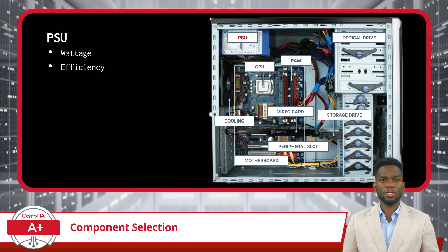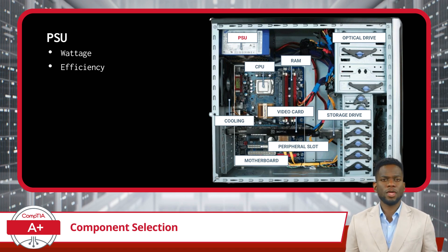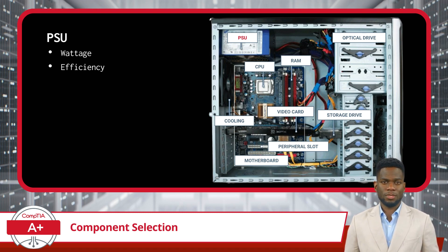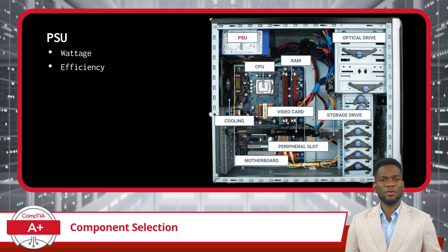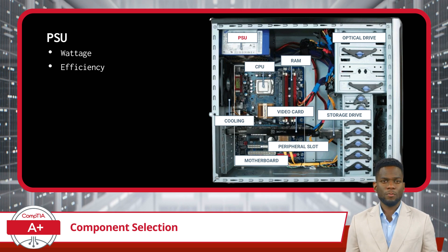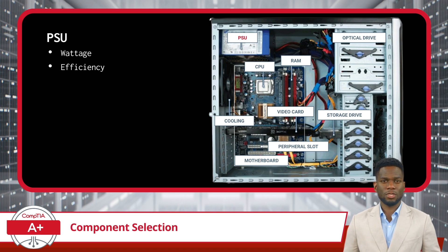Lastly, we have the power supply unit. Choosing the right wattage for a PSU is of the utmost importance. The wattage rating indicates the maximum amount of power the PSU can deliver to the system's components, including the motherboard, CPU, memory, drives, video card, peripherals, and certain cooling components. Determining the appropriate wattage rating involves considering the combined power requirements of each hardware component and efficiency ratings. Assessing the total power consumption of all components and allowing for additional headroom ensures that the PSU can handle peak power demands without issues. Additionally, selecting a PSU with a higher efficiency rating reduces wasted energy and operating costs over time.